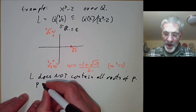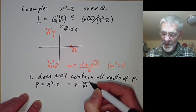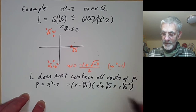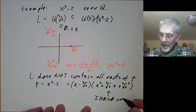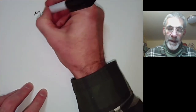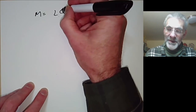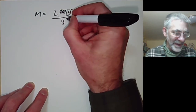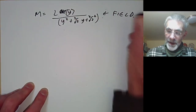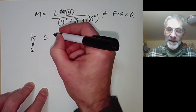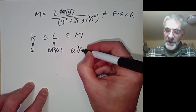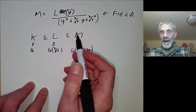So p = x³ − 2 now factors over L as (x − ∛2)(x² + ∛2·x + (∛2)²), and this quadratic factor is irreducible over L. We can now adjoin a root of this to L, forming a new field M = L[y]/(y² + ∛2·y + (∛2)²). This is again a field. So we've started with K = Q, extended to L = Q(∛2), and now M = Q(∛2, ω) is a splitting field.